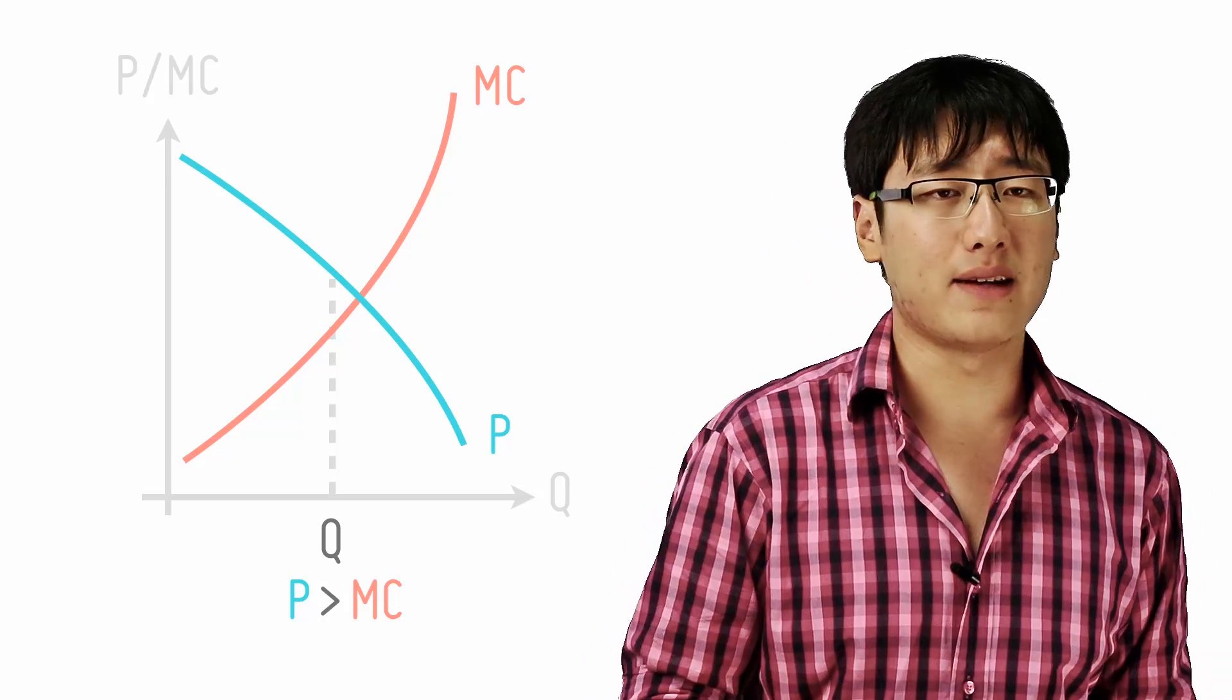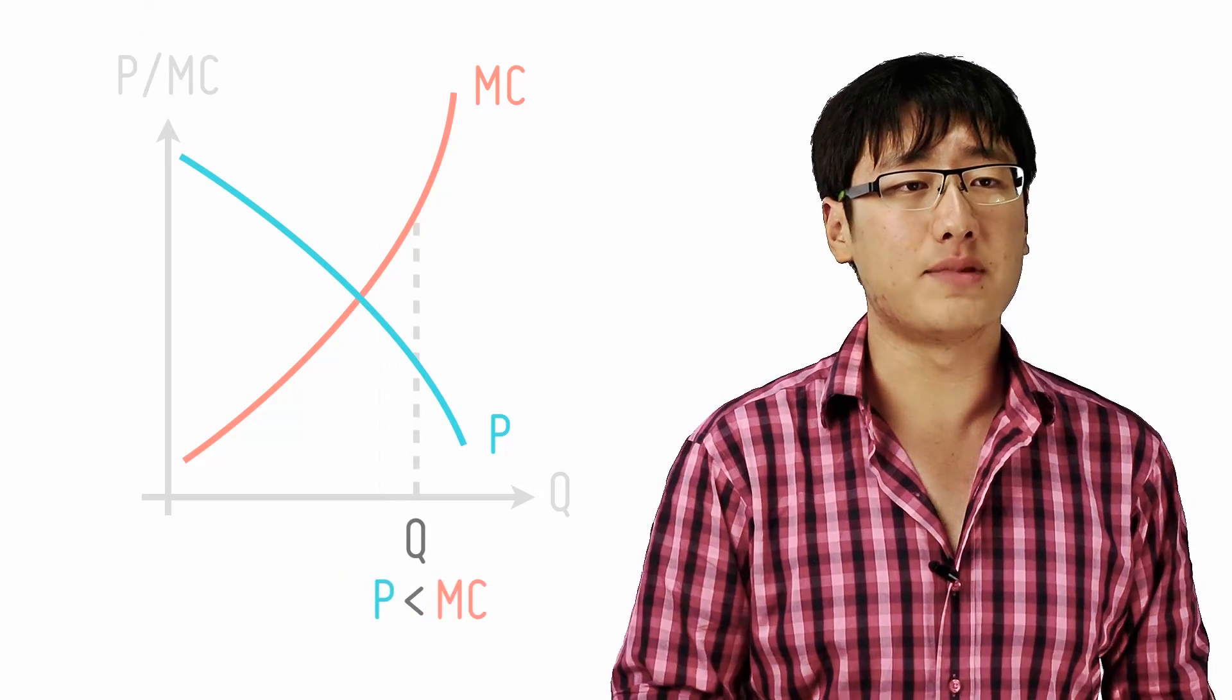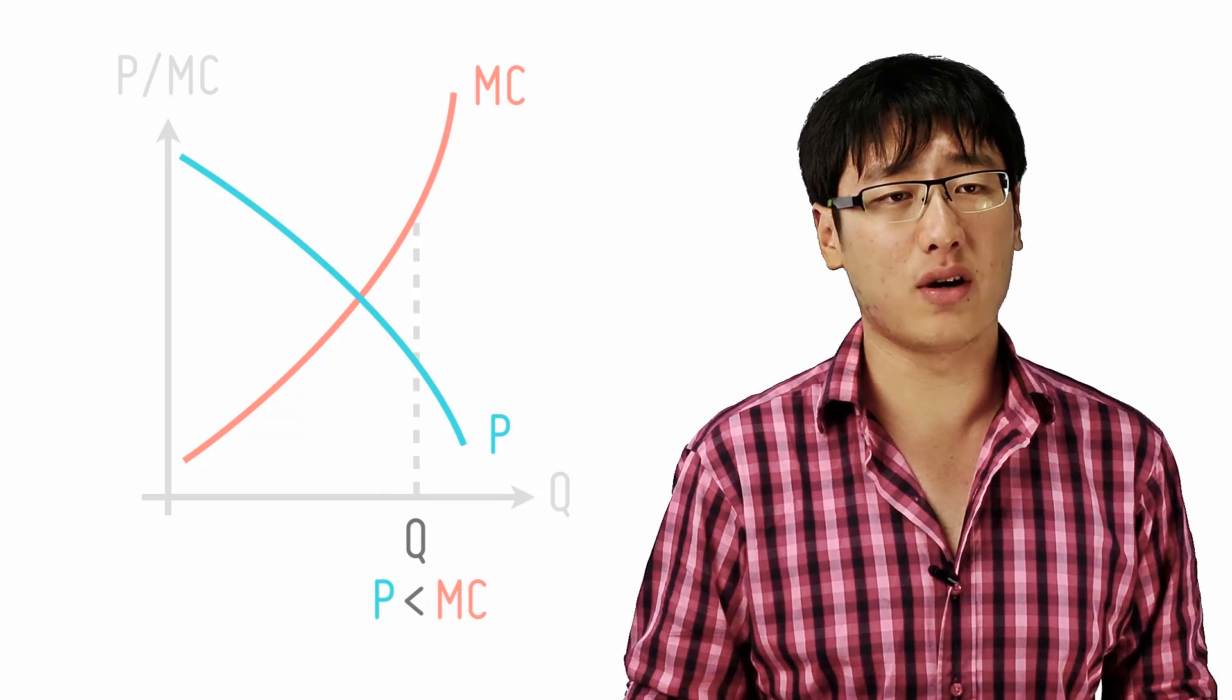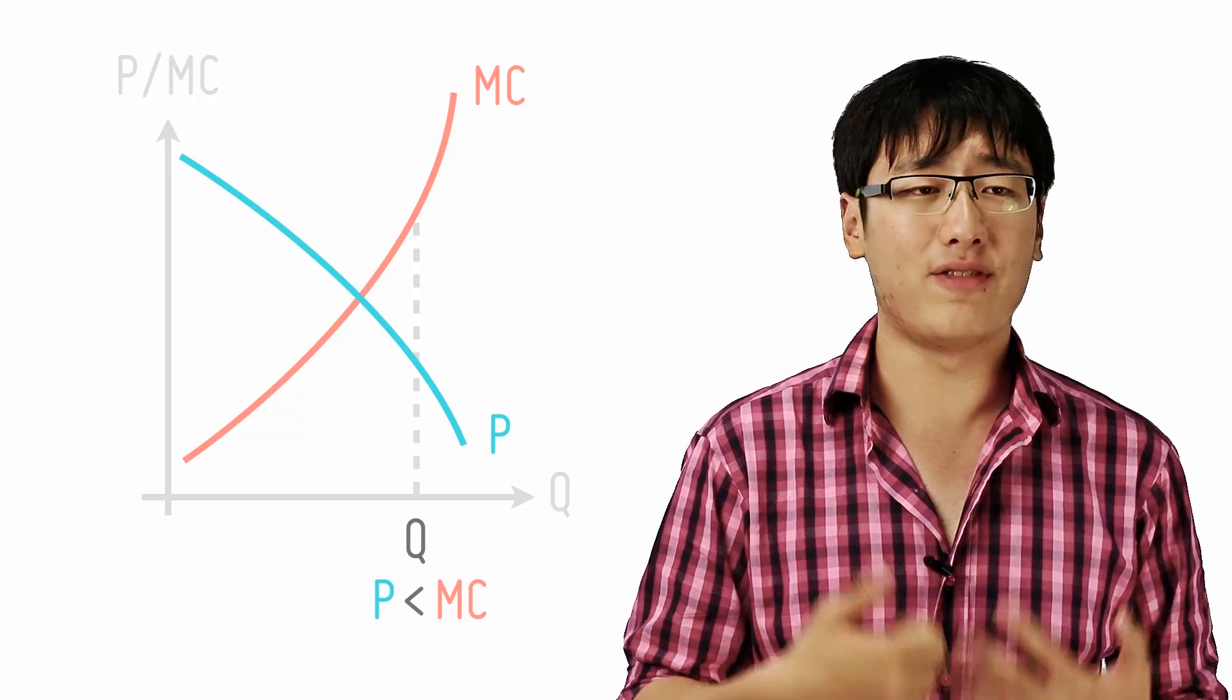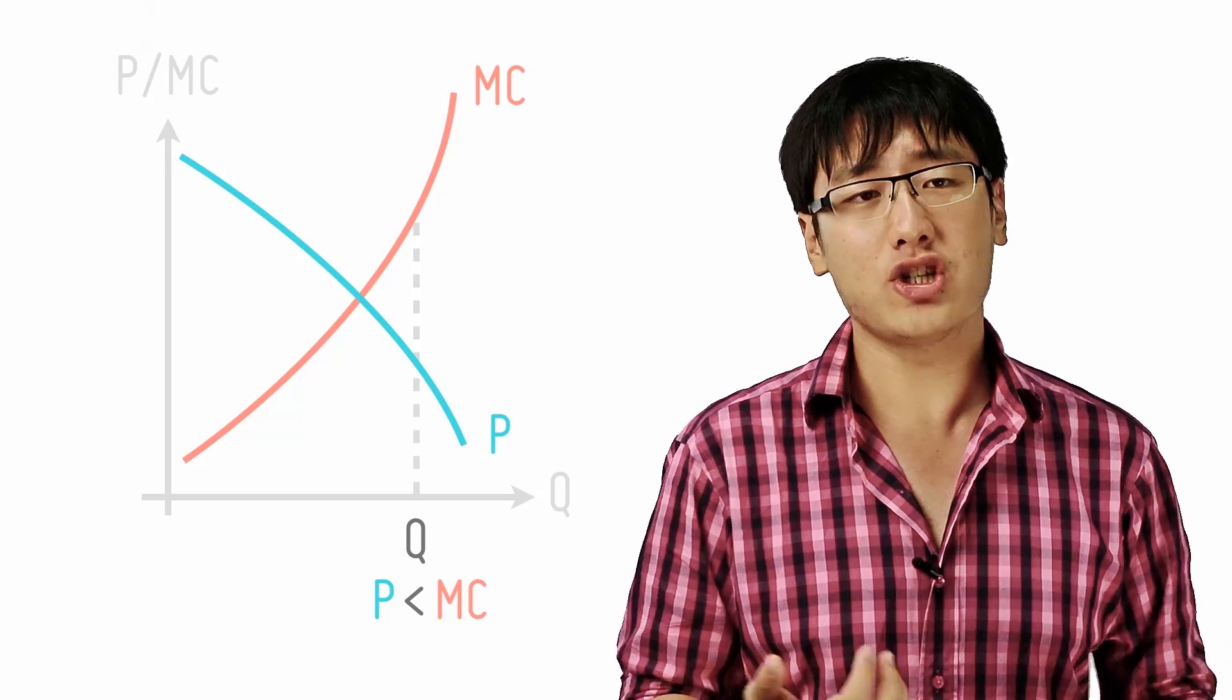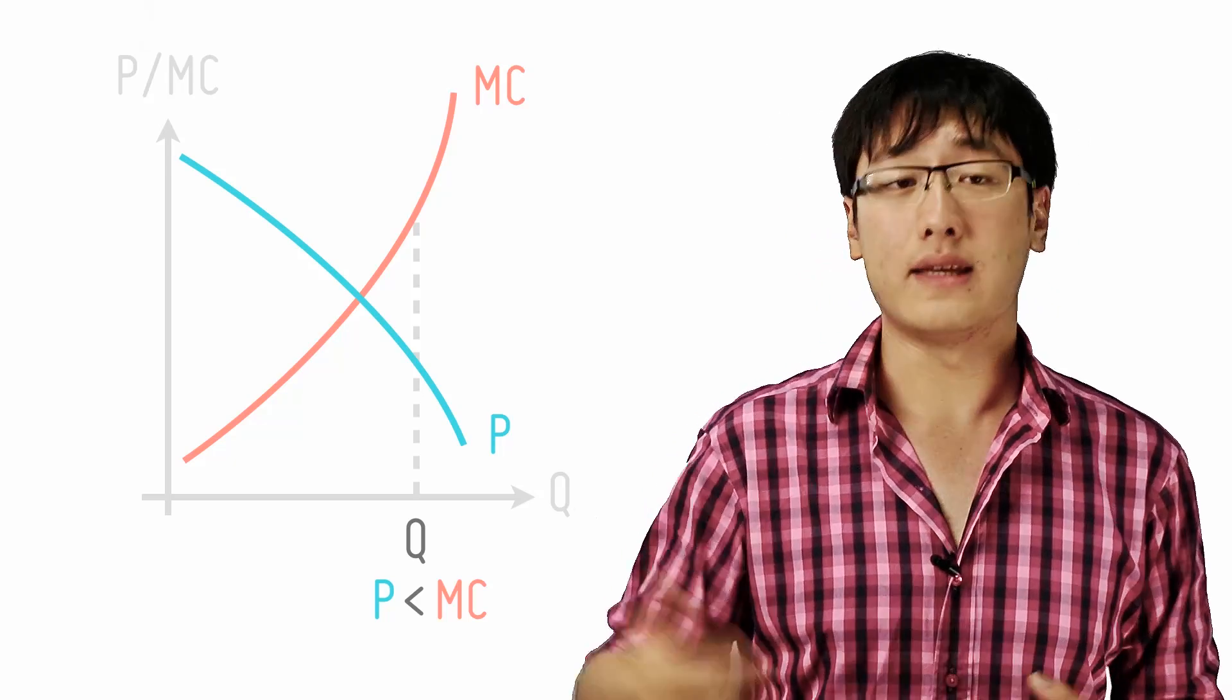Any amount higher than that, P is less than MC. So society values the last unit of good less than what it takes to produce it. So society benefits if less of it is produced. So eventually it is only maximized when P equals MC.